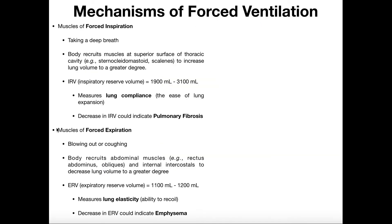One other thing about forced inspiration: we can actually quantify it by determining something called IRV — inspiratory reserve volume. This varies pretty widely with people depending on a lot of factors, but average values are between 1,900 and 3,100 milliliters. One reason we might measure IRV is to measure a person's lung compliance. Lung compliance is the ease of lung expansion — if lungs don't have compliance, they're not able to expand very easily. If a lung can expand very easily, as in an elite endurance athlete, then they have great lung compliance, and IRV can be an indirect measure of how compliant their lungs are.